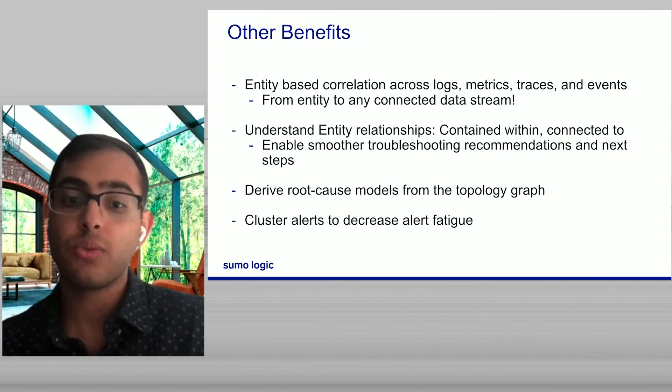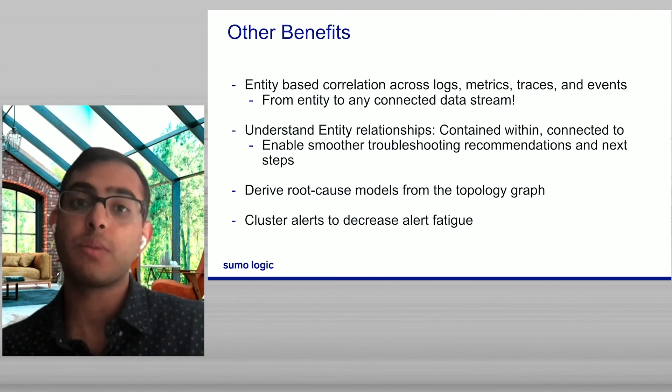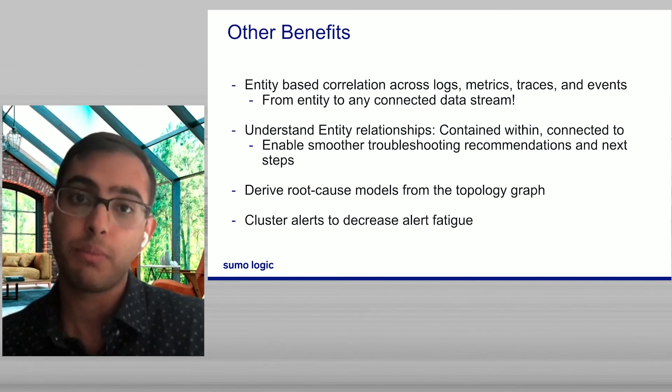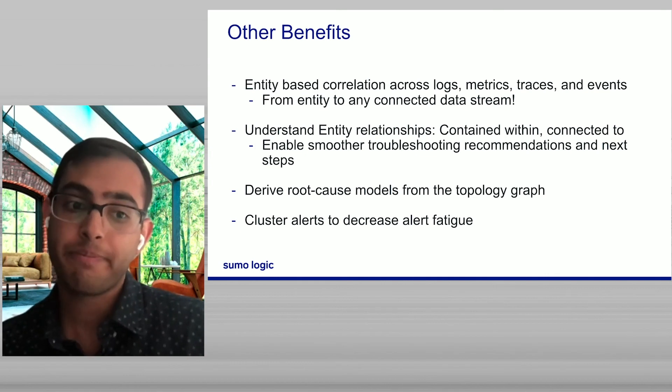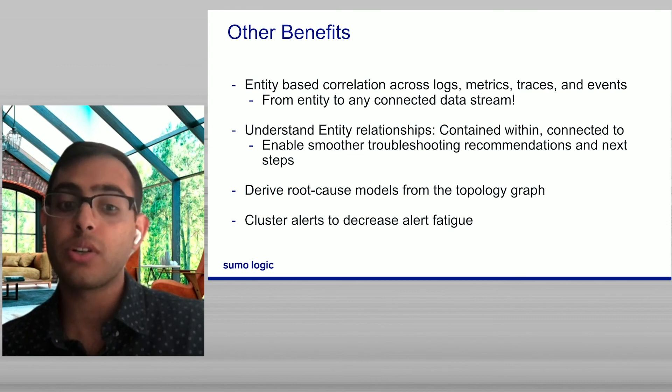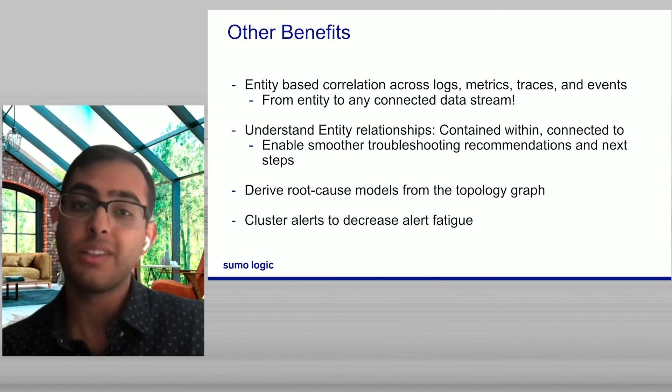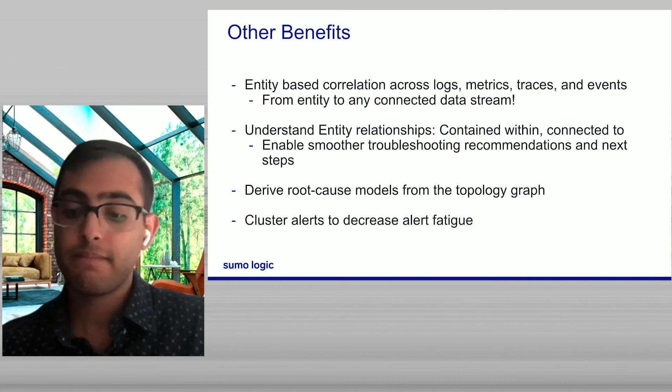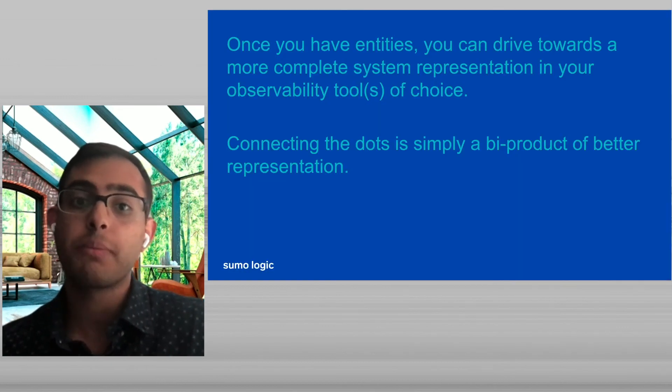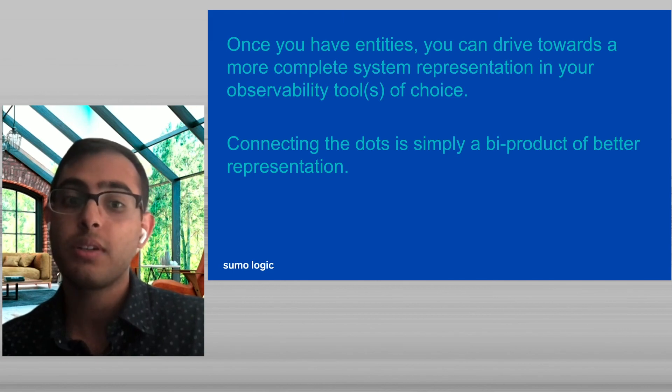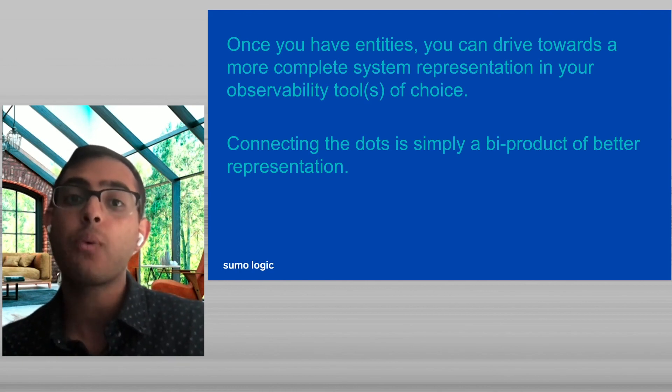Entity models also allow us to cluster alerts, so that way we're not spamming you because every single signal within an entity is firing. We're able to actually use the entity as a binding to limit out that alert scope. Once you have entities, you can drive towards a more complete system representation in your observability tools of choice. Connecting the dots becomes a simple byproduct of that representation. For us tools and vendors, we need to think about how we drive further representation. The closer we get to complete representation, the better we can do at actually correlating and providing insights rather than raw data.